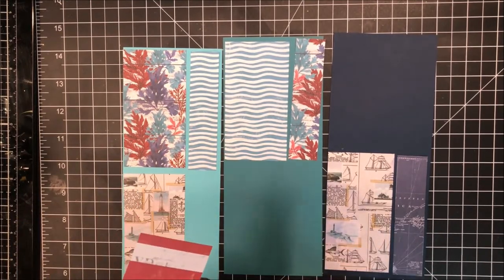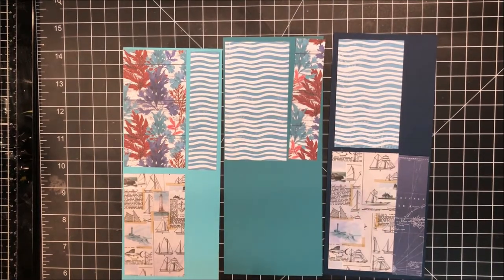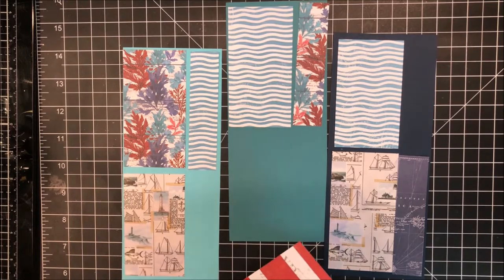And so if your pattern paper has a direction, you want to make sure it's facing the right direction when you place it on your mat. So that wording is not upside down or in this case, my boats are not upside down.